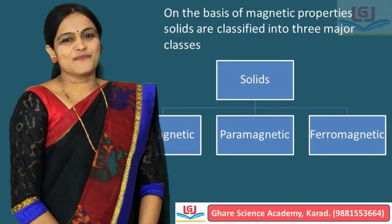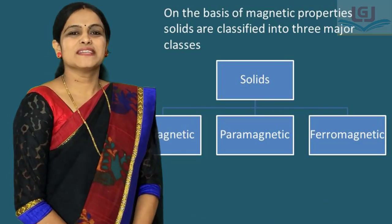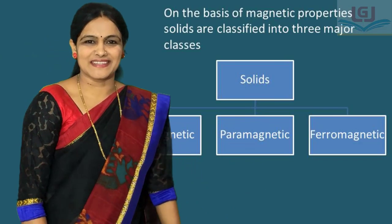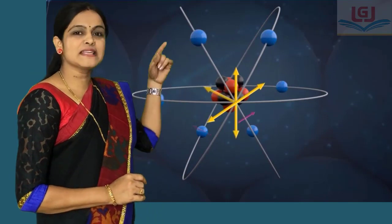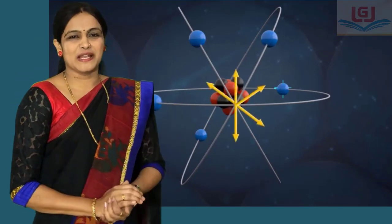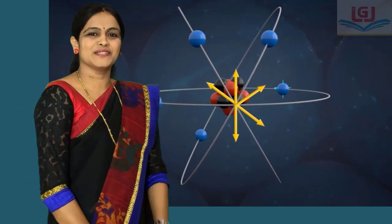On the basis of magnetic properties, solids are mainly classified into three types: diamagnetic, paramagnetic, and ferromagnetic. When electrons are paired, their spins cancel each other and therefore their magnetic moments are zero. If there are unpaired electrons, their spins are not cancelled and they show some magnetic moments. On this basis, substances are further classified as diamagnetic, paramagnetic, and ferromagnetic.